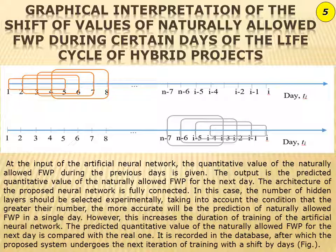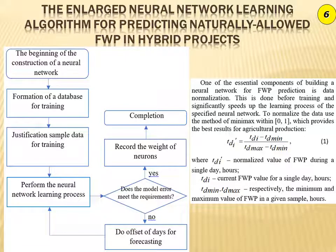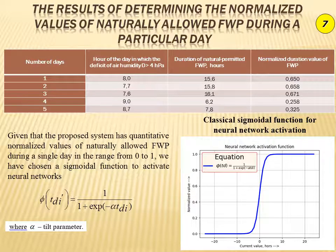The system is evaluated on the database, after which it undergoes the next iteration of training with a shift by days. Given the fact that in hybrid projects there is a change in natural and climatic components of the design environment, which makes non-stationary the statistical characteristics of the input signals, the duration of the naturally allowed fund for work performance changes over time. The results of determined and normalized values of naturally allowed fund for work performance during a single day are given in Table 1, with quantitative normalized values in the range from 0 to 1.